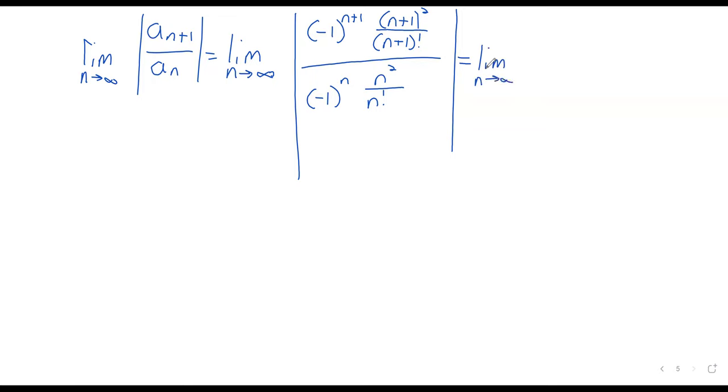So we take the limit as n goes to infinity of. So we've got negative one to the n plus one over negative one to the n. We've got n plus one squared over n squared. And we've got n factorial over n plus one factorial.